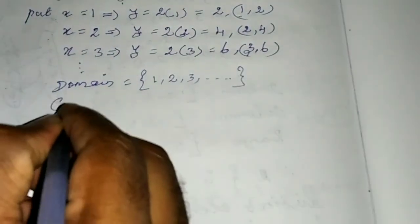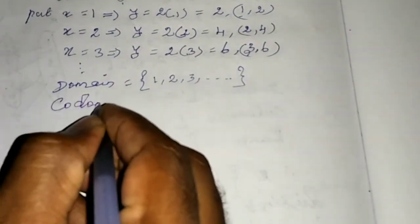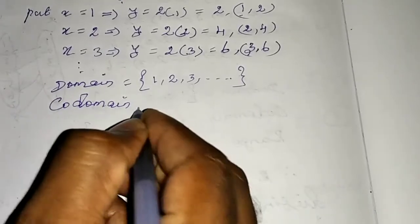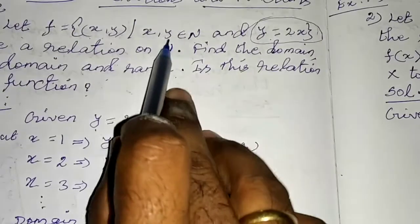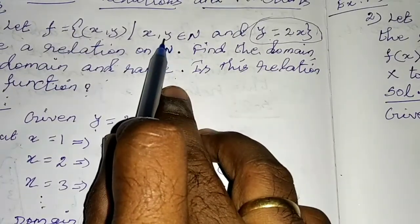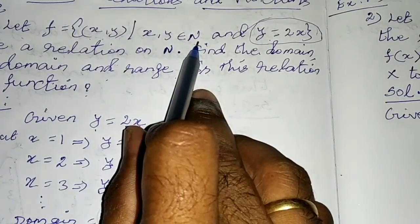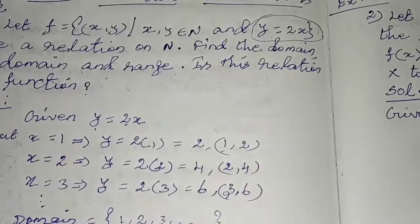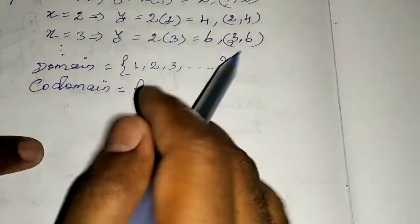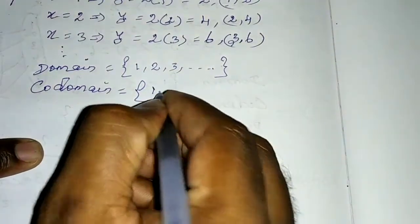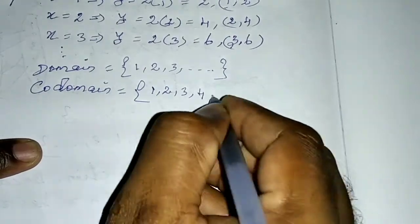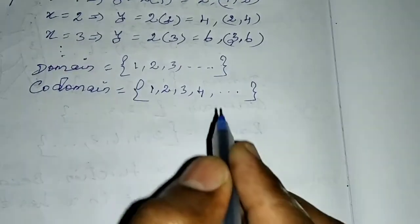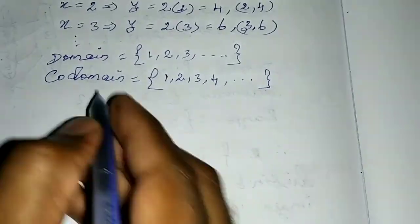Codomain means the second set in full. The second set is y, which are natural numbers. So codomain = {1, 2, 3, 4, ...} — all natural numbers.